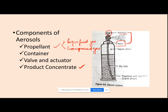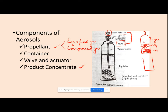In the liquefied gas propellant container, at the base you have your medicament (product concentrate), above that is your liquefied gas, and above that is the gas phase. In the compressed gas propellant container, you have your medicament at the base, and above it you have your compressed gas. The dip tube reaches all the way to the base, so whenever you press the actuator, your medicament always comes out.